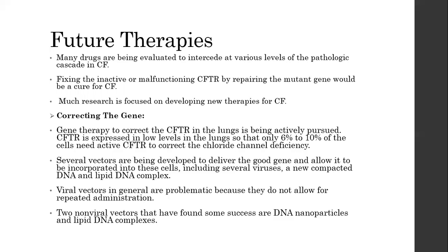CFTR is expressed at low levels in the lungs — only about 6–10% of cells. We need to correct the CFTR to fix the chloride channel deficiency. Many vectors have been developed to deliver good genes and allow incorporation into these cells, including viruses, compacted DNA, and lipid-DNA complexes.